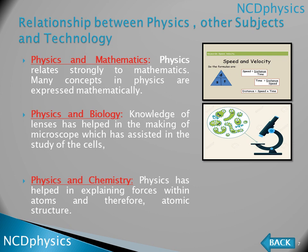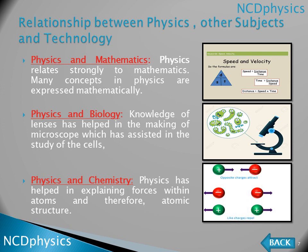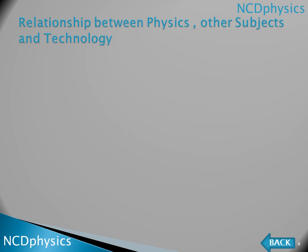Physics and chemistry: physics has helped in explaining forces within atoms and therefore atomic structure. By using physics, we can explain the forces between atoms, molecules, protons, and neutrons. For example, protons and electrons attract each other, electrons repel electrons, and protons repel protons. This attraction and repulsion can be explained by physics.